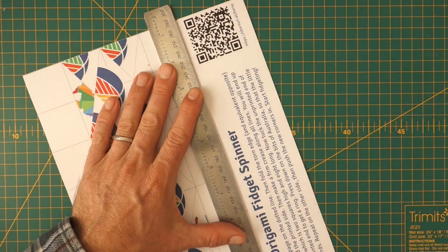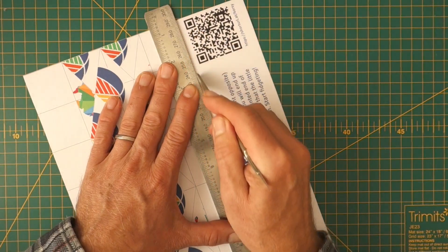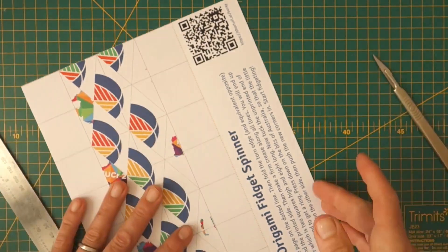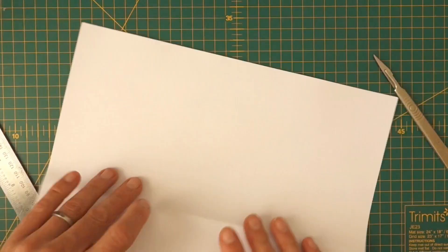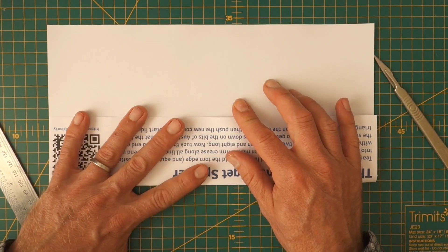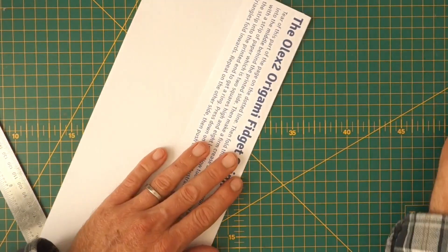If you've got a ruler handy that is quite useful and give it a bit of a score line and that bit needs to be torn off. Fold it a few times and there we go. Give it a good fold.